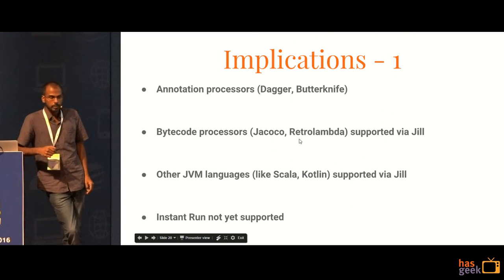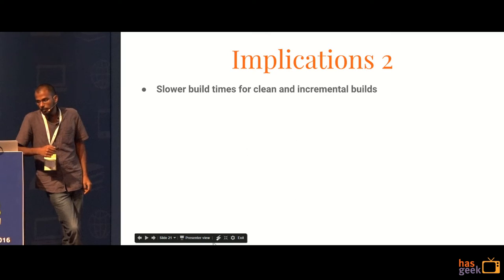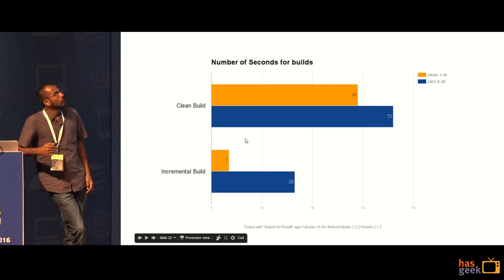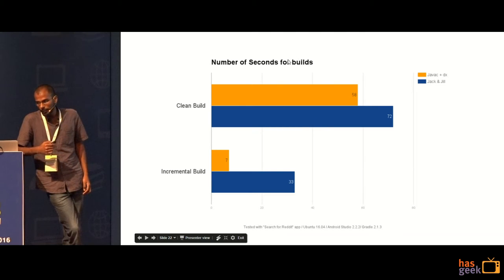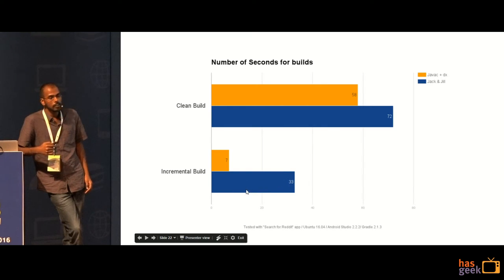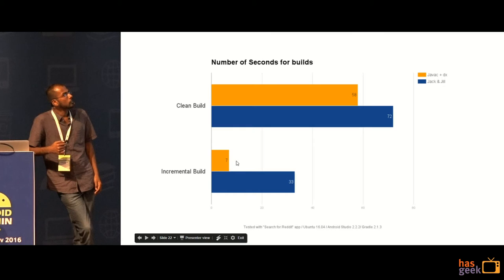Instant run is not yet supported — that is one big negative. Your build times would be slightly or very highly slower depending on whether it is a clean build or an incremental build. This is a test I ran with an app I was making. The yellow bar represents the current build process and the blue bar represents Jack and Jill. For a clean build, you can see there is about 20 seconds of difference, whereas for an incremental build the difference is wider. The difference varies based on how incremental the build is and how many classes you might have changed. This is one major negative of using Jack and Jill.